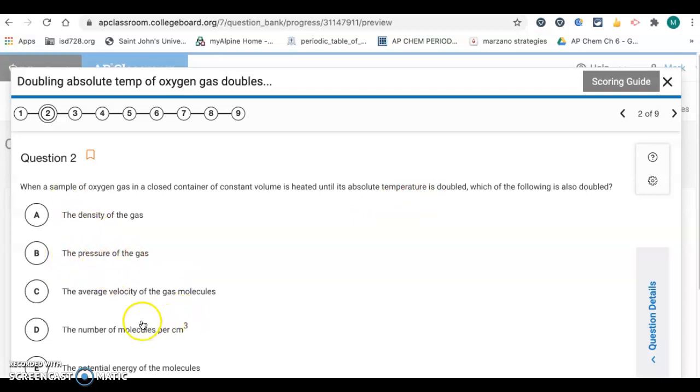These other ones are not correct. So starting with E, the potential energy of the molecules, that's in the chemical bonds. We don't worry about that. The number of molecules, it's the same sample of oxygen, so you're not changing the number of molecules. The average velocity of the gas molecules, if you said average kinetic energy, that would work. But this is saying the average velocity, kinetic energy is one-half mv squared, so this would be doubling. And then the density, it's going to be the same mass and the same volume, so the density of the gas isn't going to change either. So it's going to be B.